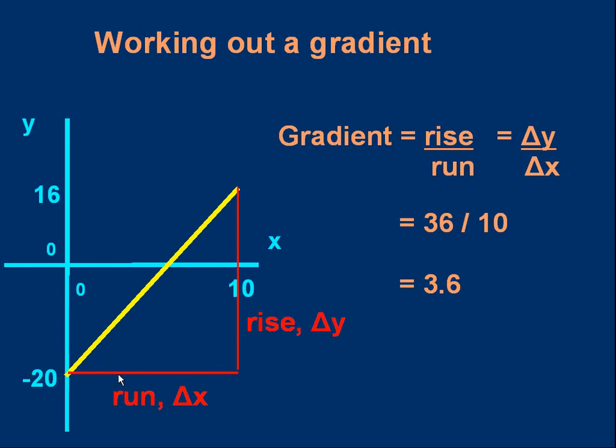So the rise is 36. And the run is from time 0 to time, sorry, from position 0 to position 10. It's 10. It's 36 over 10, 3.6. We could have drawn a smaller triangle and would have got exactly the same ratio. But if we are doing this in practice, in other words on a piece of graph paper, it's best to use the biggest triangle you can because it gives more accurate results.